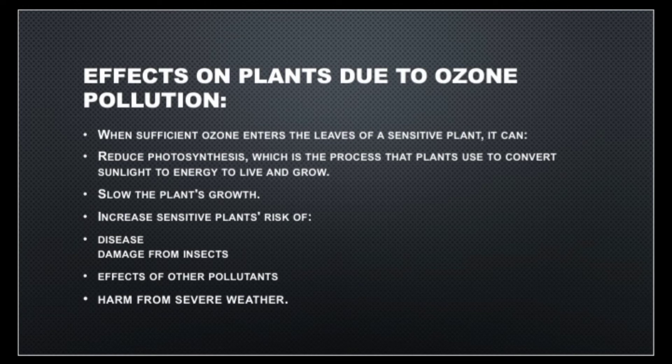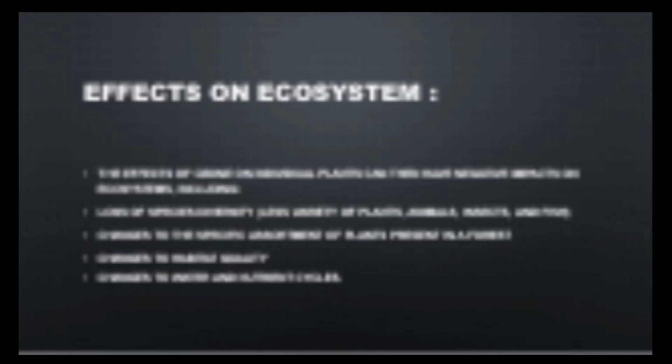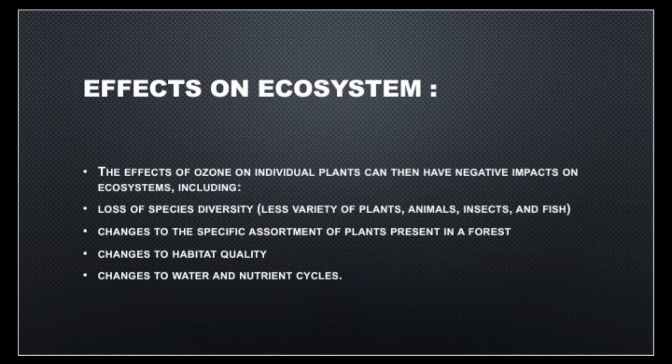Now we will discuss the effects of ozone on our ecosystem. Effects of ozone on individual plants can have negative impacts on the ecosystem, including on plants which are producers at the base of the food chain. When their growth and development are affected, the organisms that depend on them are also affected. This way we will see less variety of plants, animals, insects, and fish, and changes to the specific assortment of plants present in a forest.